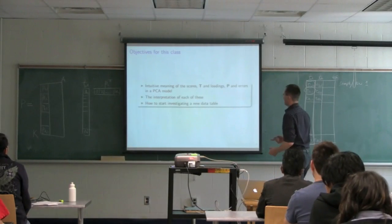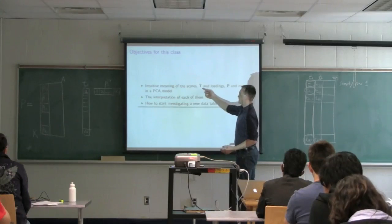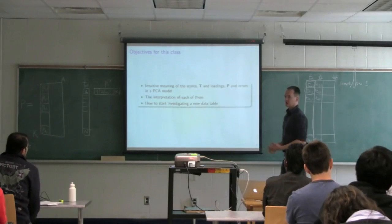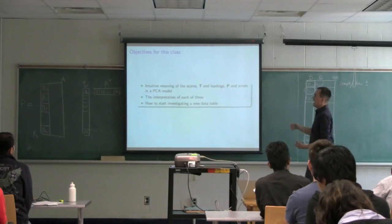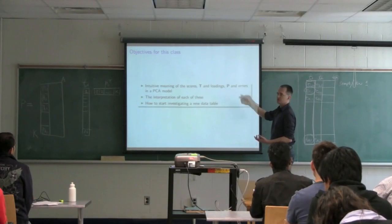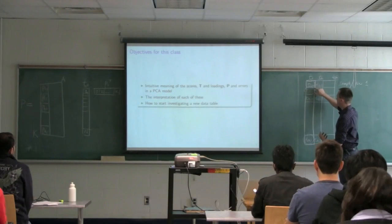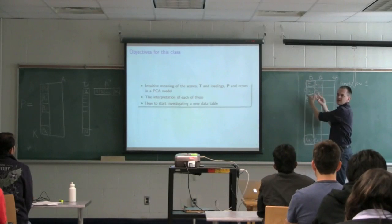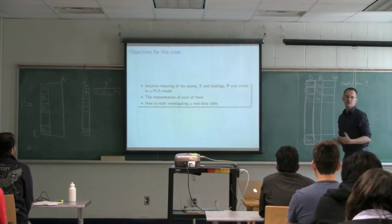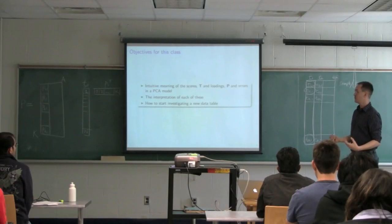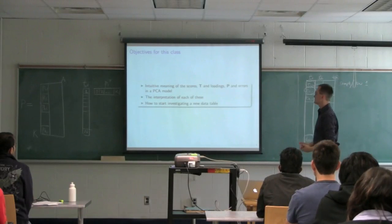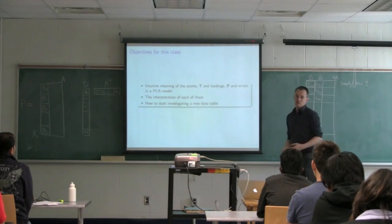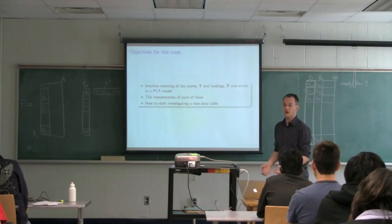We're going to cover the intuitive meaning of the scores — capital T matrix — then look at the loadings, and also the errors. The T values capture and summarize each row of X, but there will be some residual error since one number can't capture all the information in a row. We'll interpret all of these — the T's, the P's, and the errors — and do several examples at the end of class.